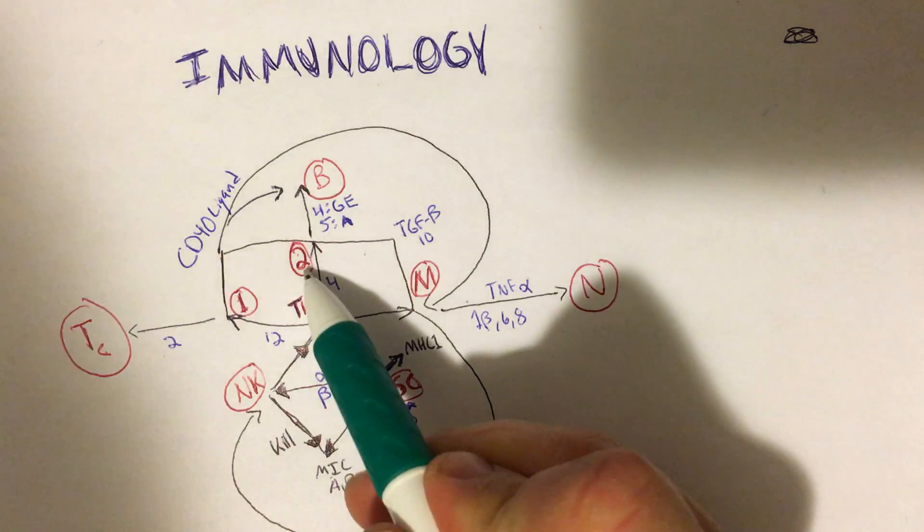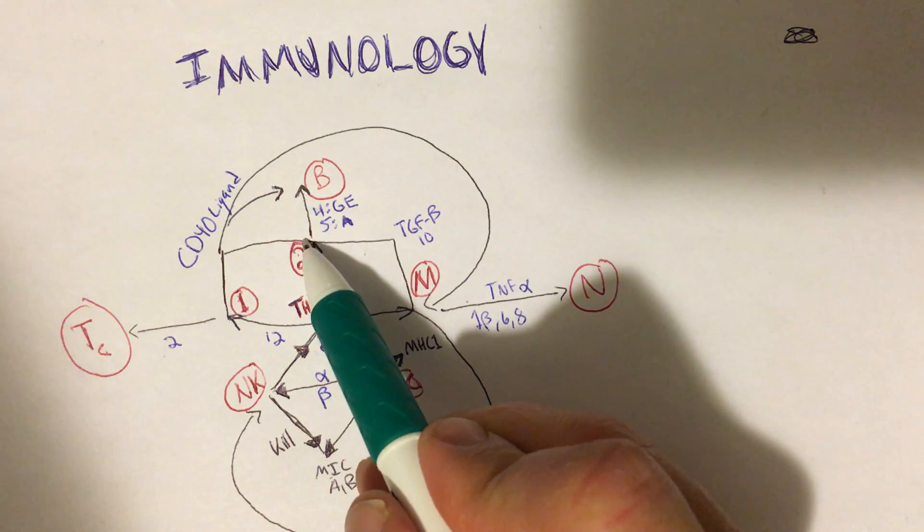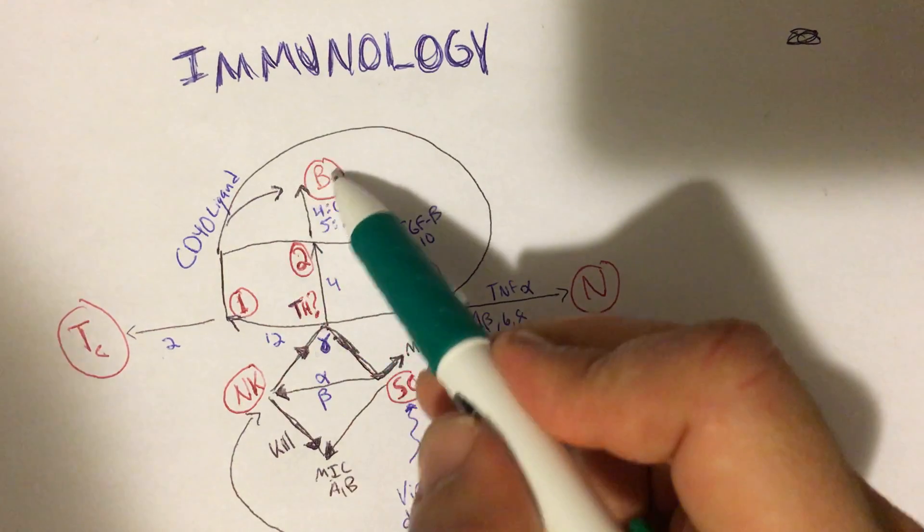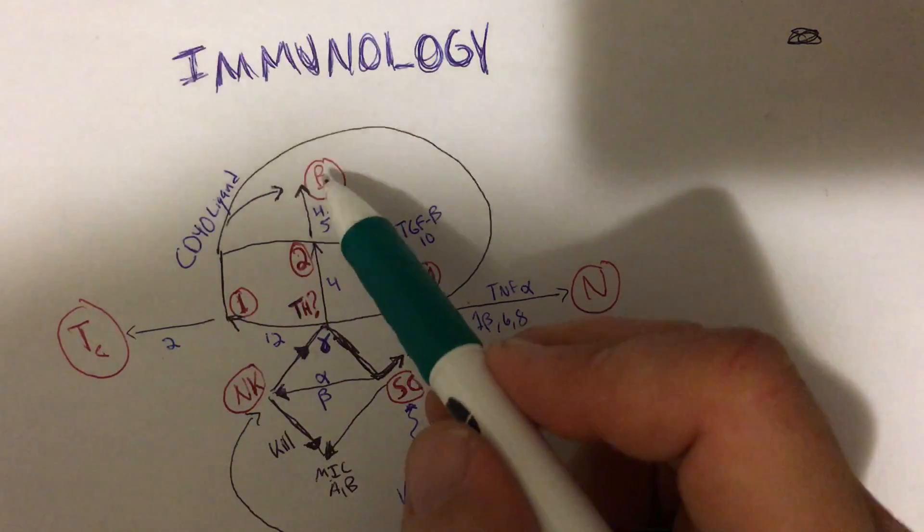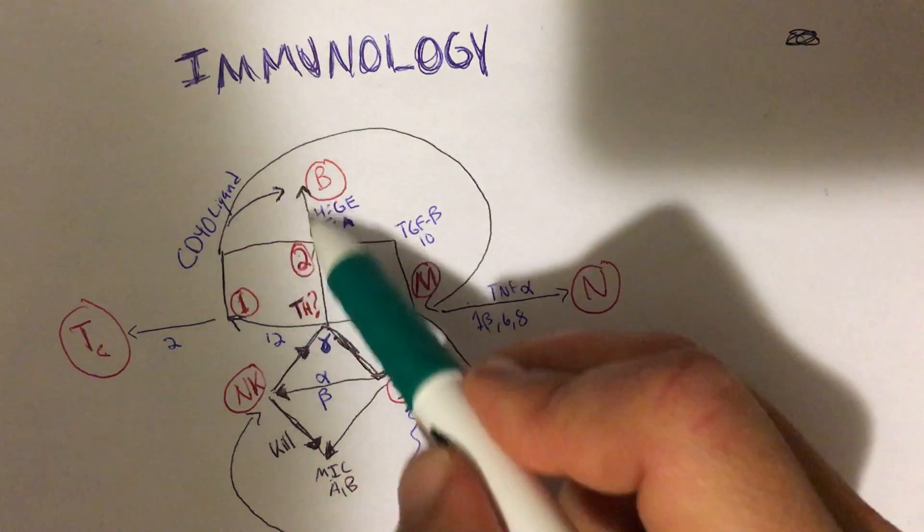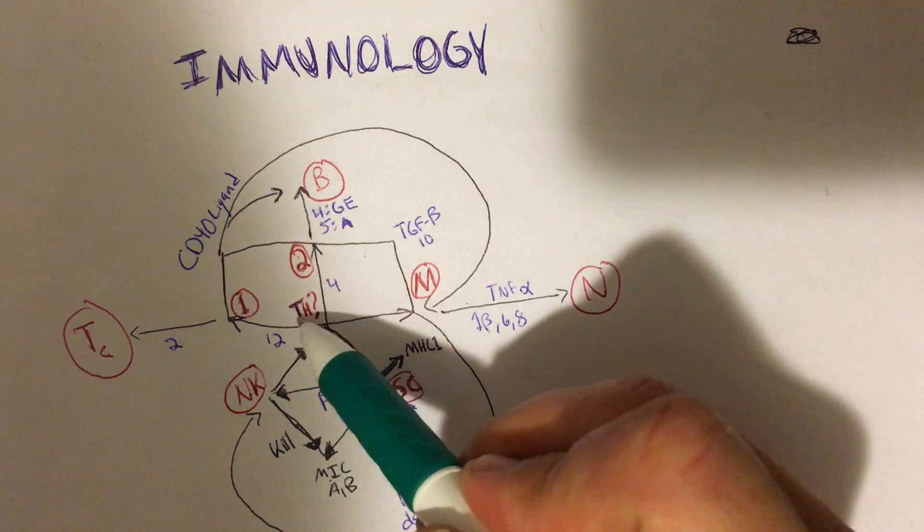So now on top of that, there is one thing that both TH1 and TH2 both do, and that is basically they upregulate CD40 ligand. Now this part of the map gets a little nuanced here because really that happens and all you got to do is just draw an arrow to remind yourself. So helper T cells - the 2 subtype - will upregulate CD40 ligand.